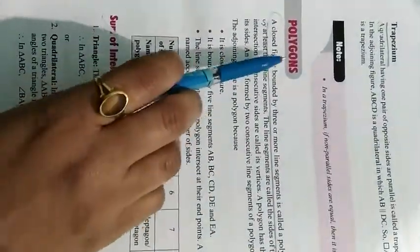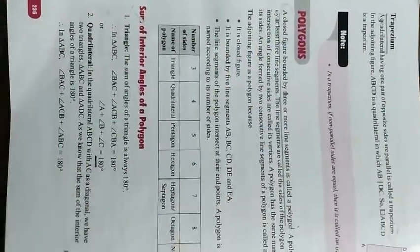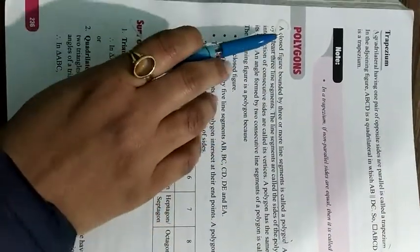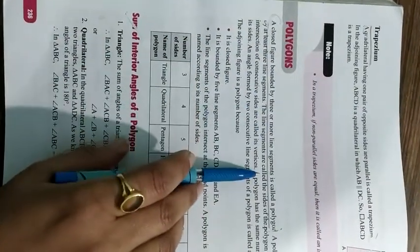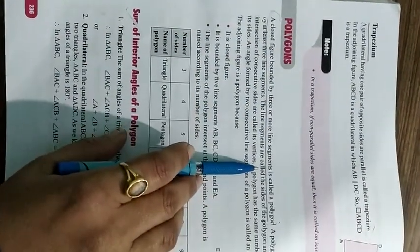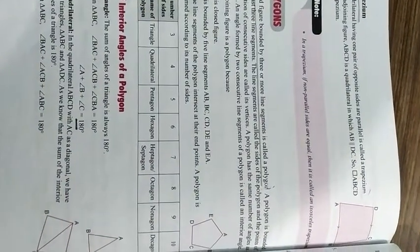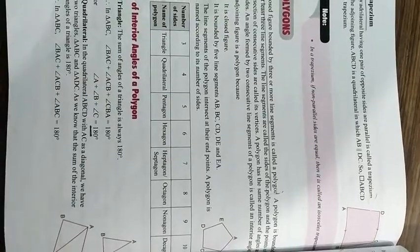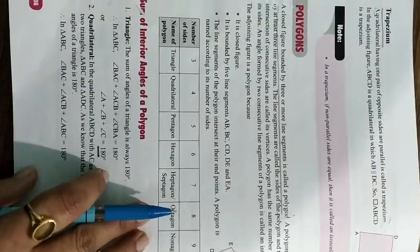Next topic is polygon. What is a polygon? Any closed figure bounded by three or more line segments is called a polygon. A quadrilateral is also known as a polygon. A triangle is also a polygon. So any closed figure having three or more sides is called a polygon.